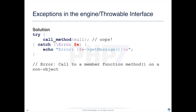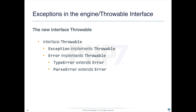We've all written code something like this. I've got a function called do_something, and it takes an object as a parameter. Inside, we simply call the method nope on the object. Well, what happens if you call do_something with null? You've all done something like this — we might call it with an object that is inadvertently null. It will try to fire nope, and that's going to be the end of your program. Now that we have exceptions in the engine and a throwable interface, we've got a way to gracefully handle this.